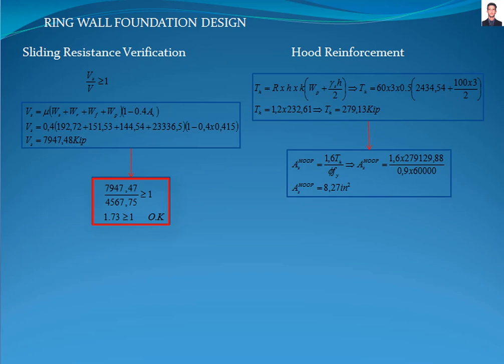The next step is to calculate the reinforcement required by the ring wall foundation. First, we calculate the factored hoop tension force TH with the equation of section 5.6.3.3 of the Process Industry Practice STE 03-020 standard, where R is the radius of the tank, H is the height of the ring wall, and K is the lateral earth pressure coefficient assigned as 0.5, as required by section 5.1.8 of PIP STE 03-020. All values are at service level and must be factored for compatibility with ACI 318: dead, live, and product loads multiplied by 1.2, seismic load by 1.4, and wind load by 1.6. The result is 279.30 kips.